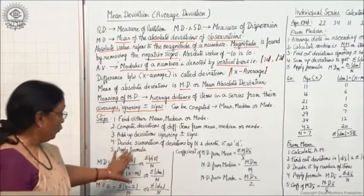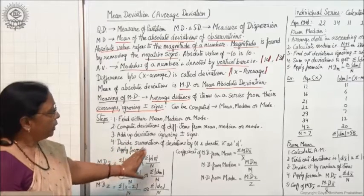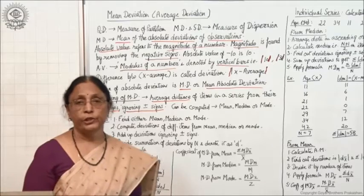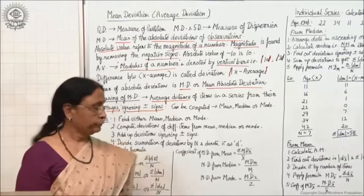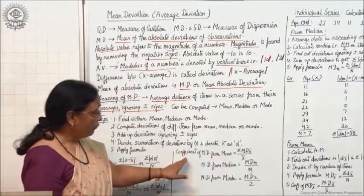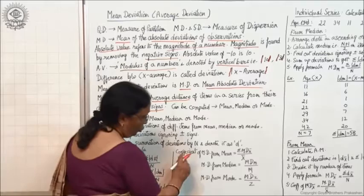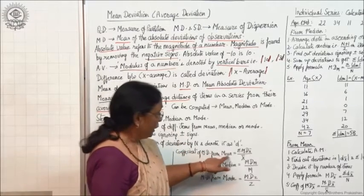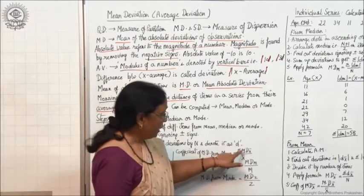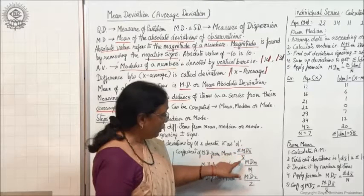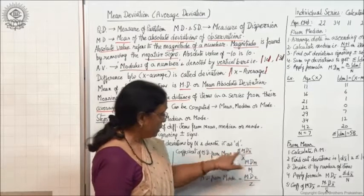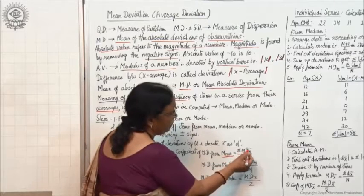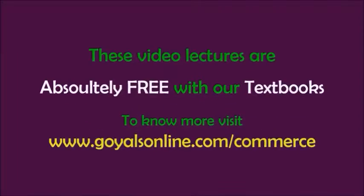These are the formulas, and with an example I will show how to apply them. The coefficient of mean deviation is a relative measure: coefficient of MD from mean equals MD x̄ divided by x̄, since we are computing from the mean.